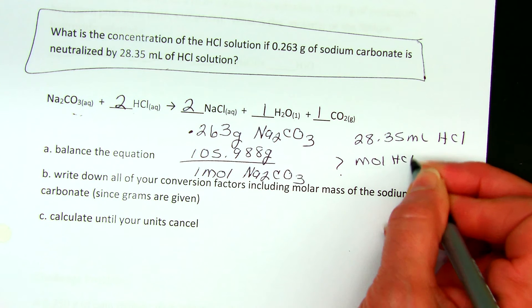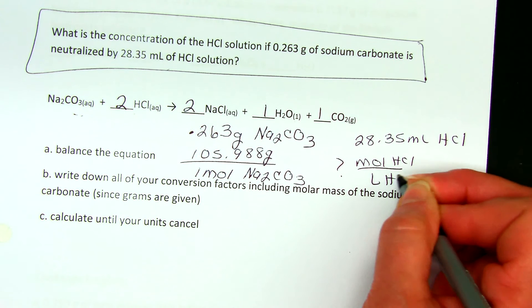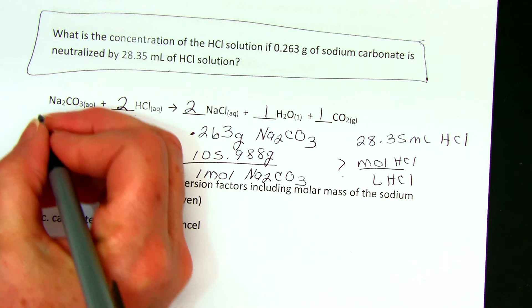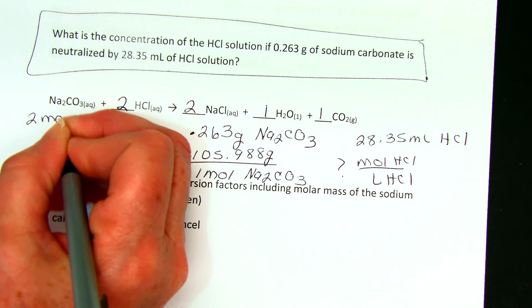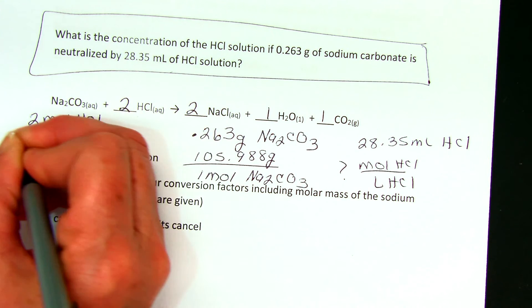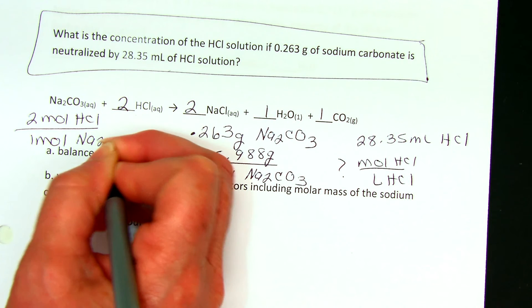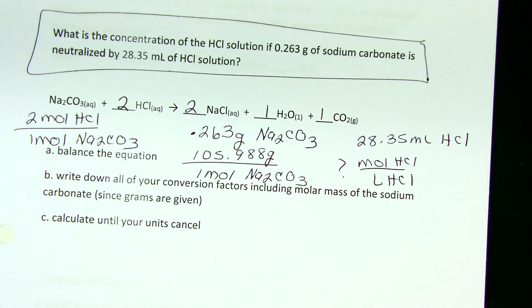So I want moles of HCl per liter of HCl. And I know that I'm allowing the sodium carbonate and the HCl to react, so that means I need a conversion factor between them—two moles of HCl per one mole of sodium carbonate. So now I have all the information that was given to me in the problem and that I could infer from the equations.